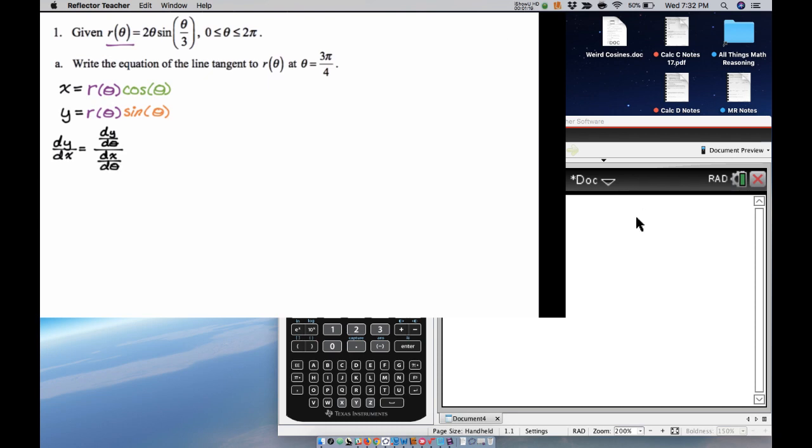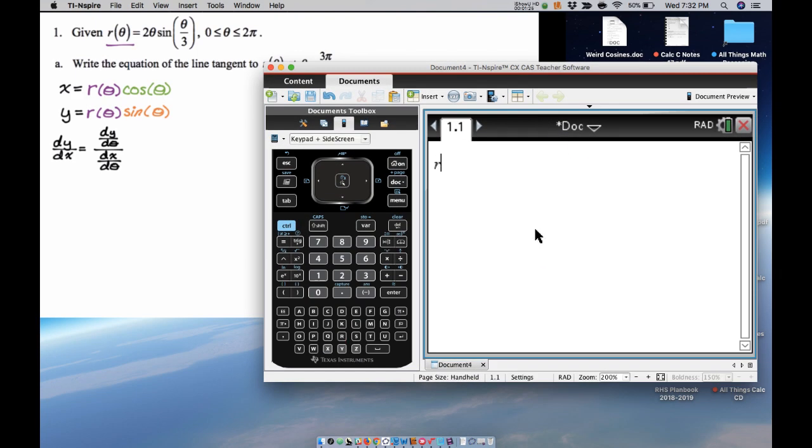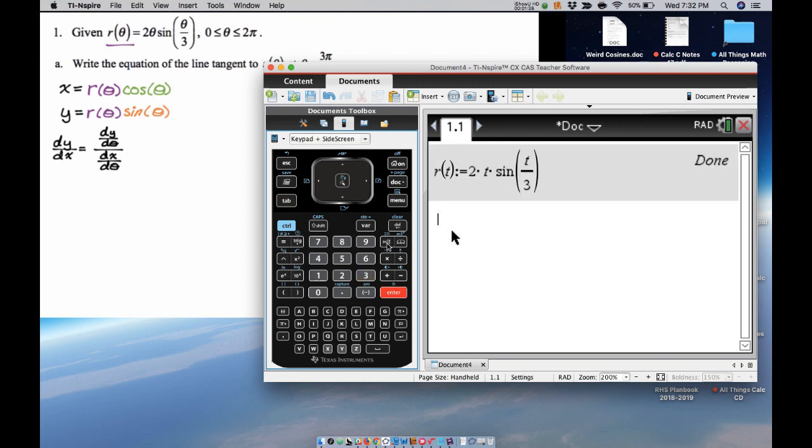So what I'm going to do is I'm going to store all those things on my calculator. First I'm going to store r(t) because theta is kind of annoying. So 2t times sin(t/3). Now let's store x(t), and that's going to be r(t) times cos(t). Store y(t), so y(t) is r(t) times sin(t).